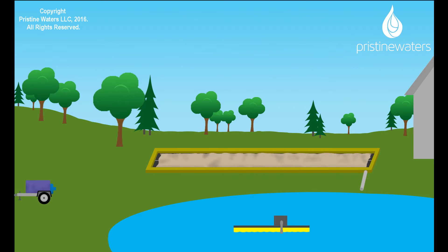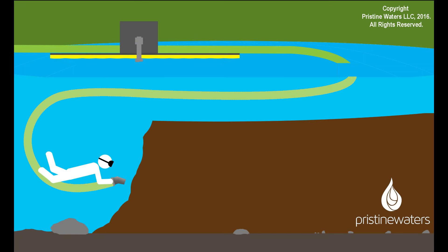A geotextile tube is placed to collect sediment and allow water to return to the pond or lake. We set our land-based suction dredge and connect it all with suction hose.